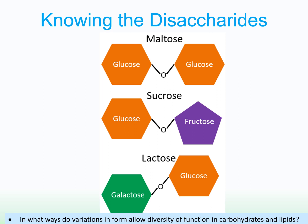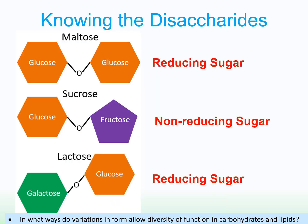It's worth learning your disaccharides. Maltose is made from two alpha glucose molecules. Sucrose is made from alpha glucose and fructose. Lactose is made from alpha glucose and galactose. You also need to know which are reducing sugars. Maltose and lactose are reducing sugars — they remove electrons from other molecules. Sucrose is a non-reducing sugar. A way to remember: 'it sucks' because sucrose is the non-reducing one.